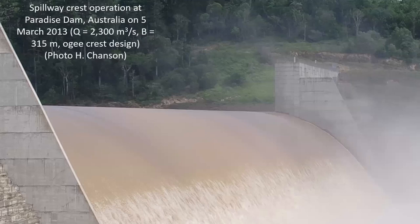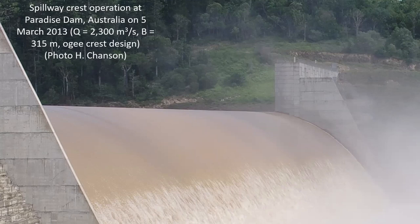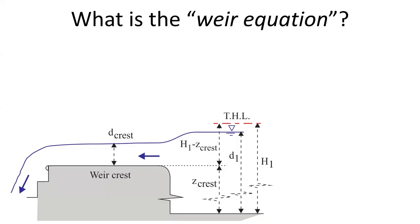One application is spillway operation where we link the volumetric discharge above the spillway crest as a function of the reservoir elevation. Here is a photograph of Paradise Dam in Australia on March 5, 2013, discharging 2300 cubic meters per second.